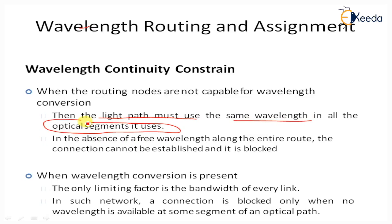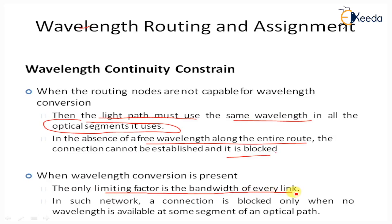It provides the same wavelength for the optical segments used in a particular network. In the absence of a free wavelength along the entire route, the connection cannot be established and is blocked. When wavelength conversion is present, the only limiting factor is the bandwidth of every link, and a connection is blocked only when no wavelength is available at some segment in the optical path.